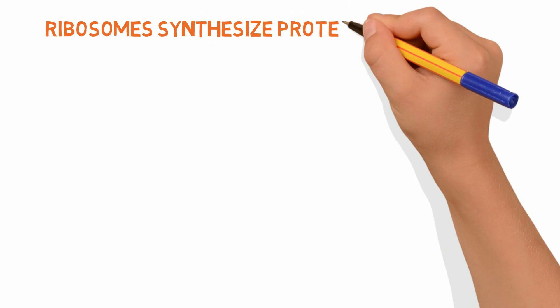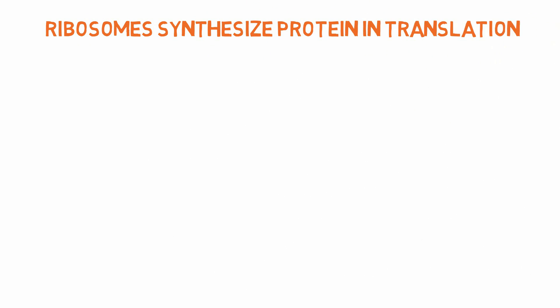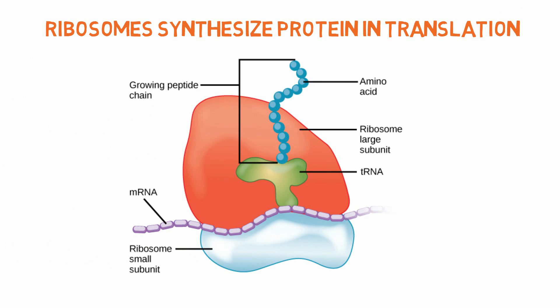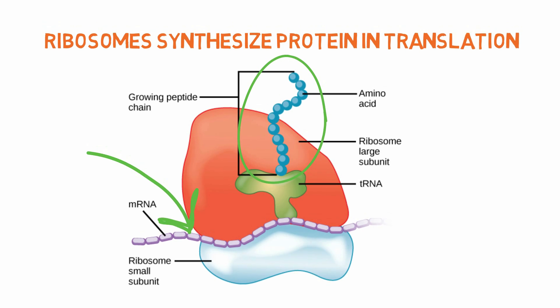Ribosomes synthesize protein in a process called translation, where they read strands of mRNA and bring the right amino acids together to build a long polypeptide chain that will eventually become a functioning protein. I'll make a separate video about this whole process and link it below when it's ready.